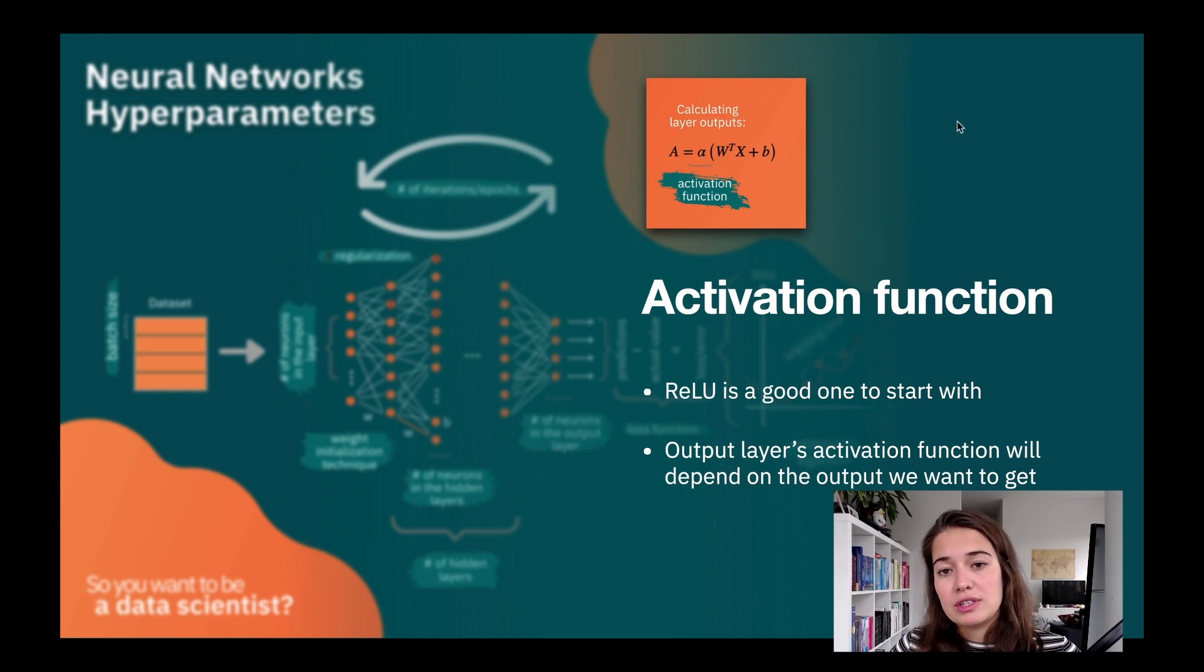The activation function is a thing that helps us learn or fit into complex problems. Because as I said, if you have a linear function, especially in the hidden layers, then you're not going to be able to learn complex patterns in the data. But as you mentioned before, ReLU is a good one to start with for your hidden layers. And for the output layer...